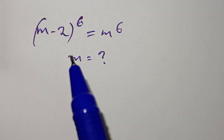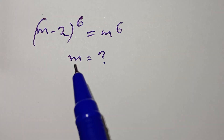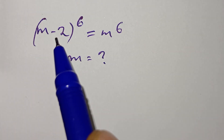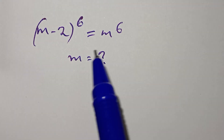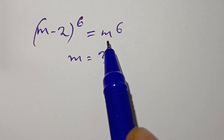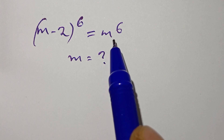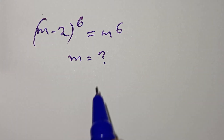Hi everybody. How to solve this: (m minus 2) to the power of 6 is equal to m to the power of 6.